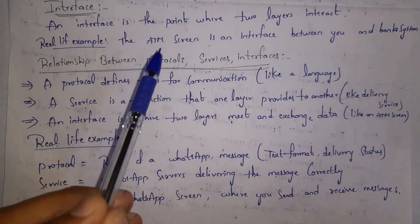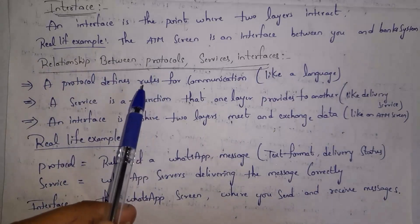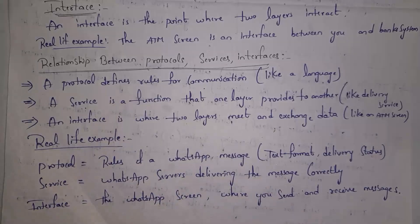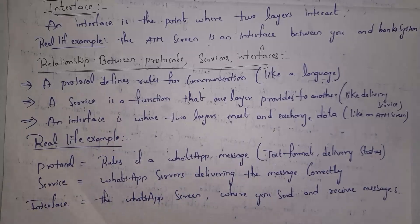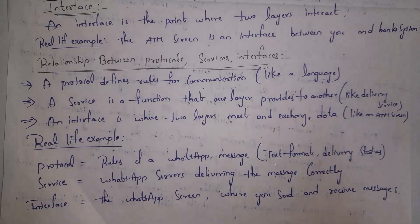To summarize the relationship: protocols are rules by following which computers can communicate in a network — protocol is like a language for communication. Service is the task done by one layer that is useful to another layer. Interface is the point where two layers interact, like the ATM machine screen.